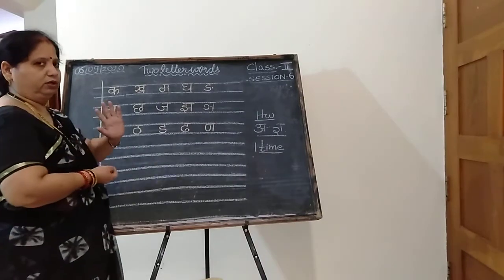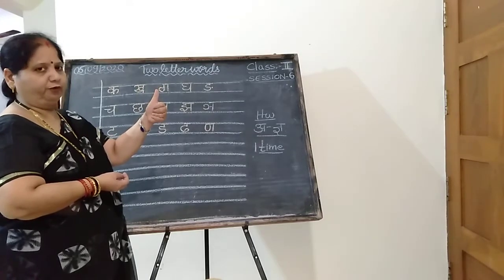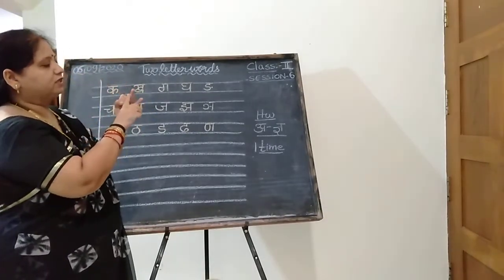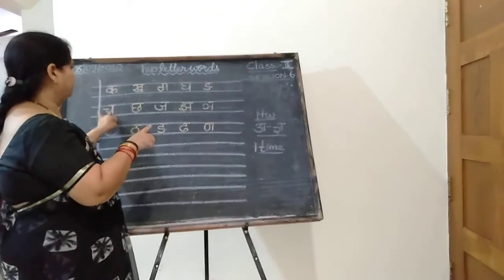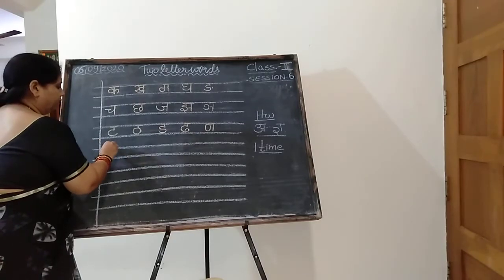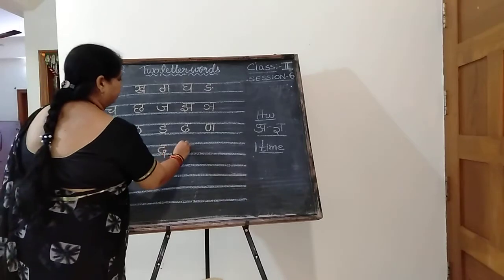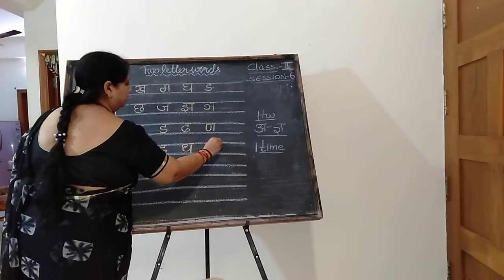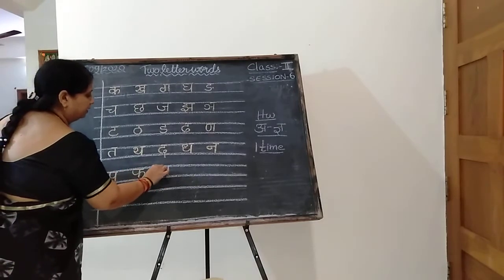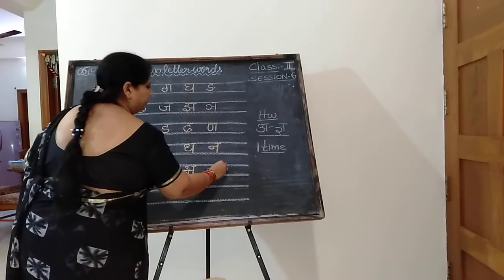Third row starts from Tha, fourth row that is also Tha — Tha se Dhanush, Na se Nal. Next: Pa se Patan, Pa se Fal, Ba se Batat, Ba se Bhavan, Ma se Machhali, Ma se Matar. Take out the five fingers — little finger shows the K row. First row stands for K, second row starts from Ch, third row from Tha, fourth row is Tha.